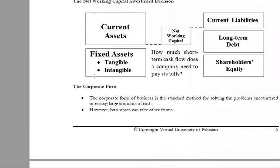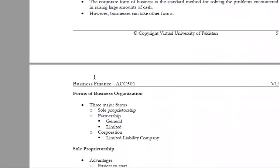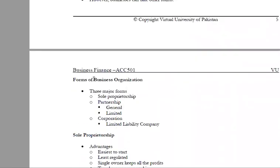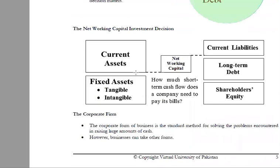Networking capital covers day-to-day activities. Where do we need money from the firm? This refers to current assets used in daily operations.